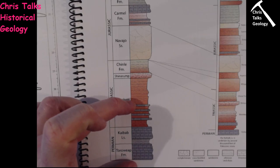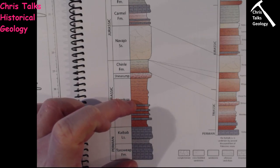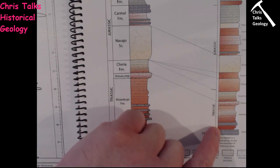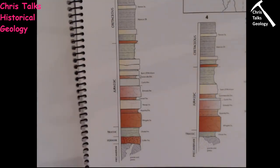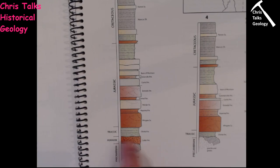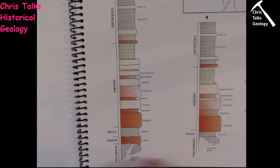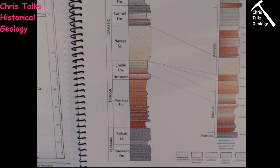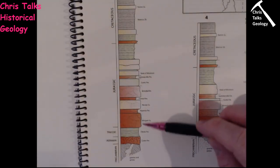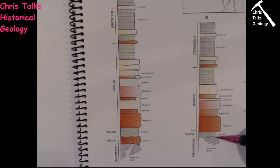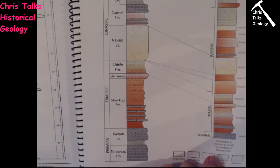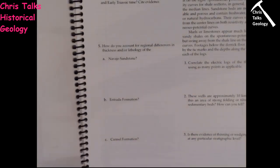Looking at the sequence beneath the Chili Formation: in one column we have marine sediments — limestones — then moving across the layers get much thinner, then we completely lose marine sediments and instead have a conglomerate, and then the conglomerate disappears too. So maybe we're moving from a marine environment into a continental environment. Alternatively, maybe erosion is the explanation — rocks below the Chili Formation may have been eroded a little, then quite a lot, then completely, before the Chili Formation was deposited. You'll have to decide which explanation you find most convincing.